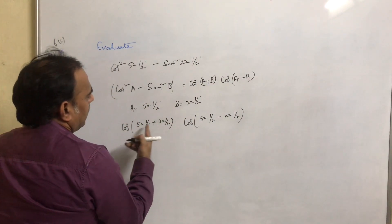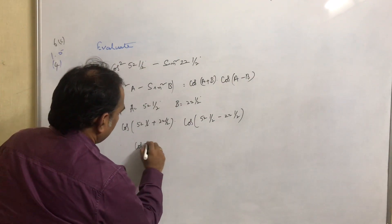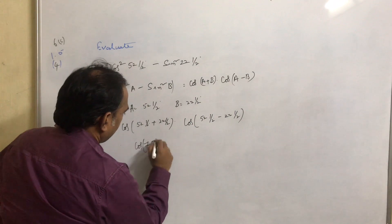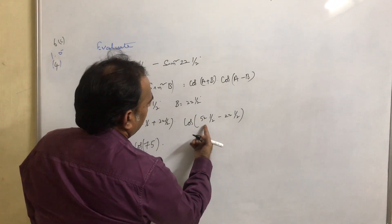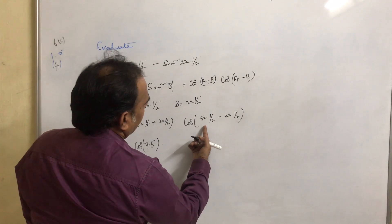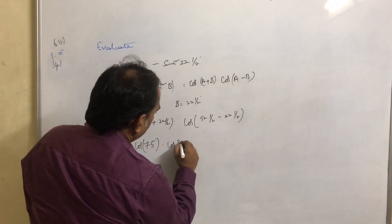This is 55, 65, 75. This is cos 75°. This is 20, 50, 40, 30. This is cos 30°.